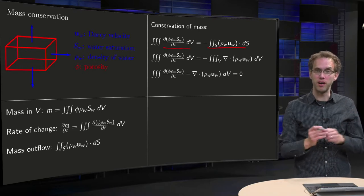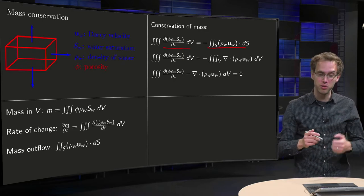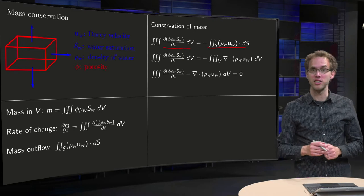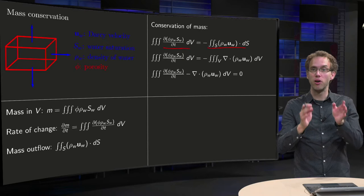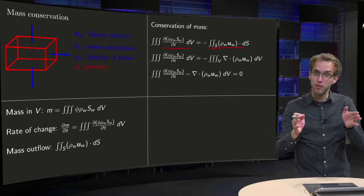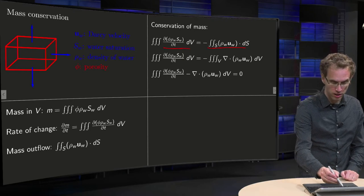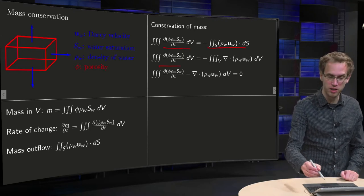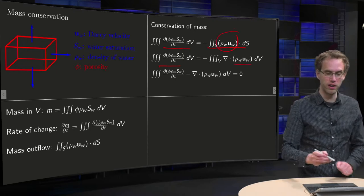So we have some horrible integral equation, but now we can simplify it. First of all we can use the divergence theorem on the right hand side. The divergence theorem tells you that the surface integral of some vector field in a surface equals the volume integral over the divergence of the vector field. So we keep the right hand side and from the left hand side we get the divergence of ρ times UW.